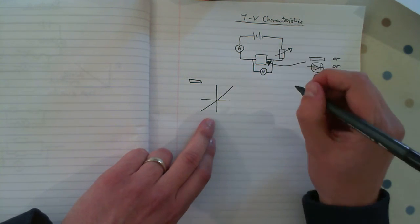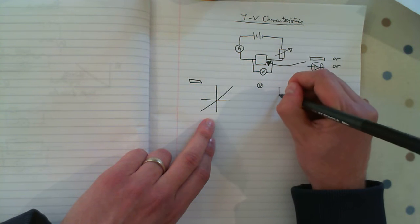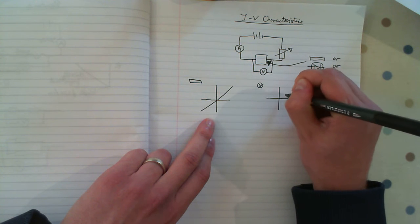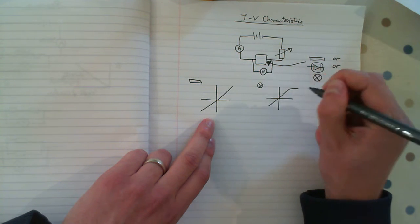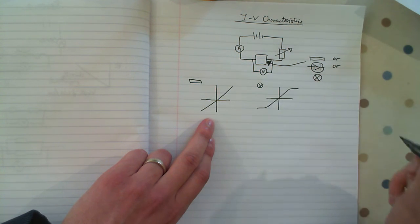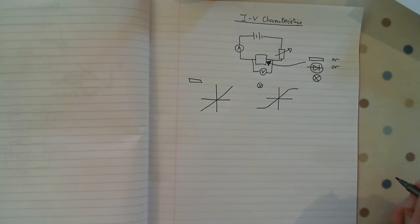For the filament bulb, you'll get directly proportional ohmic resistance in the middle bit, and then it will plateau. And it will plateau in the other direction. It does not curl down, it does not curl up.